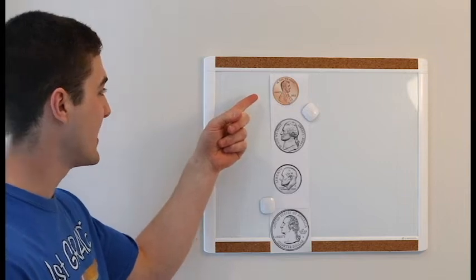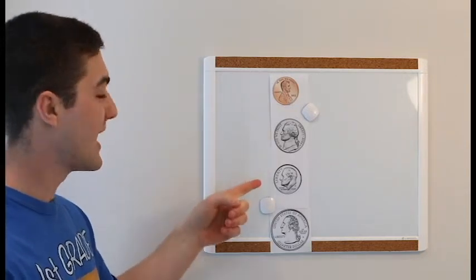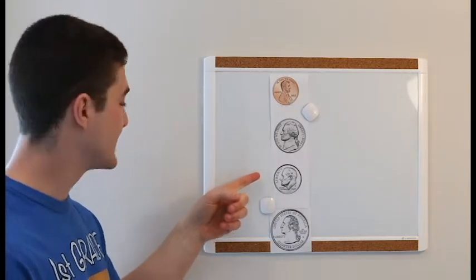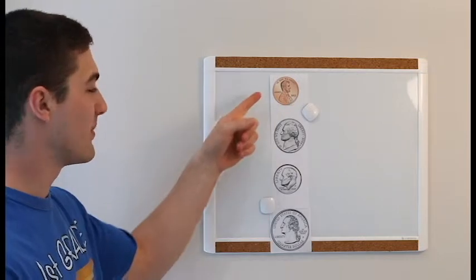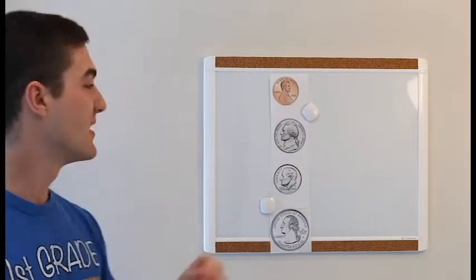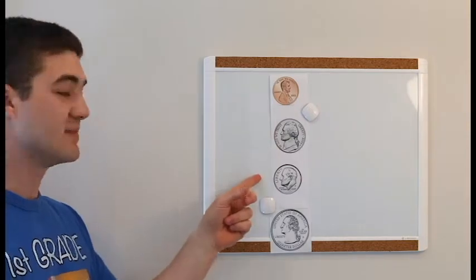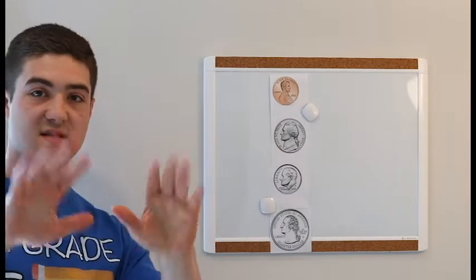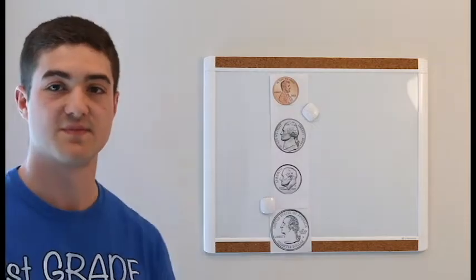How much is a penny? How much is a nickel? How much is a dime? How much is a quarter? A penny is one. A nickel is five. A dime is ten. A quarter is twenty-five. I hope you guys were singing along with me so that I wasn't the only one doing it by myself.